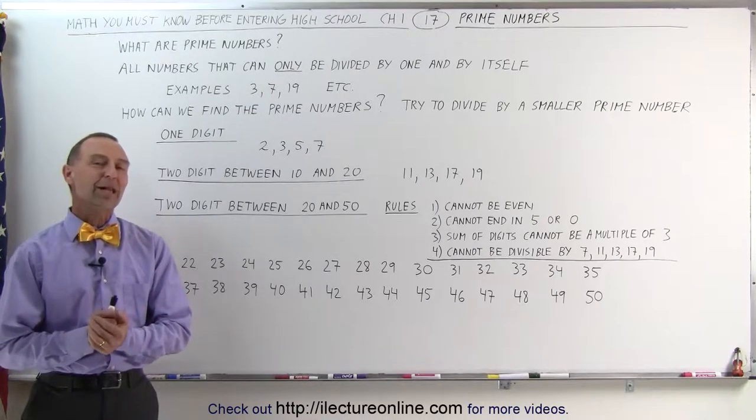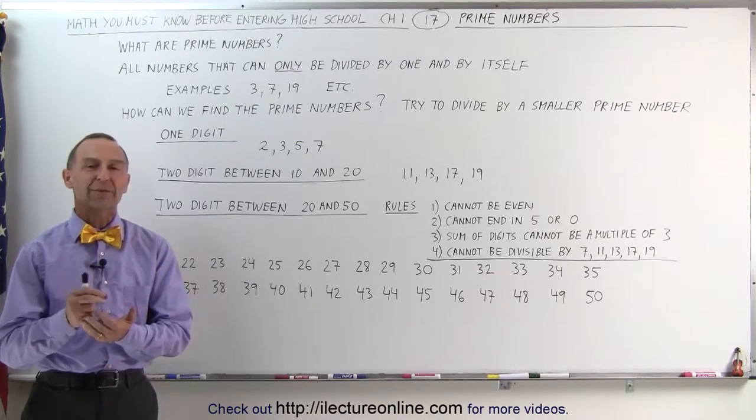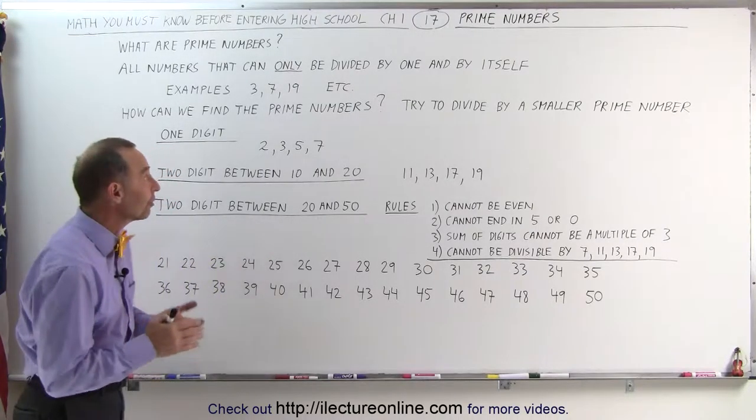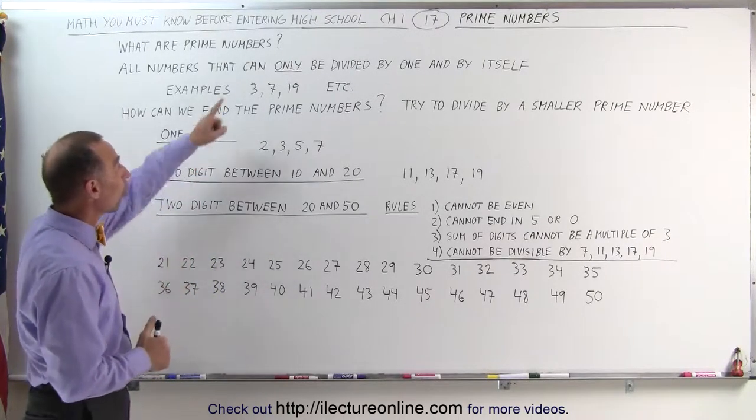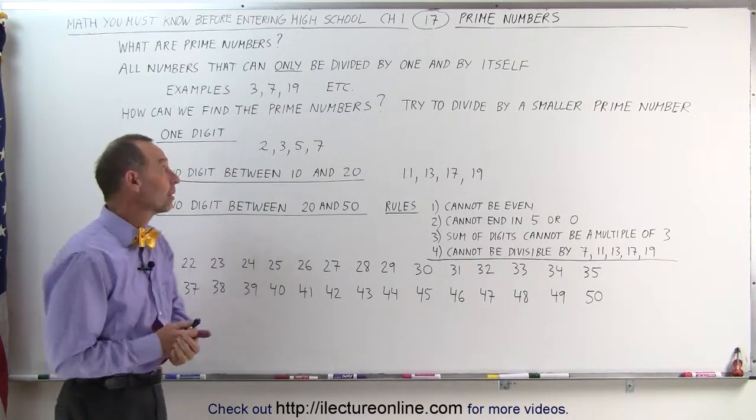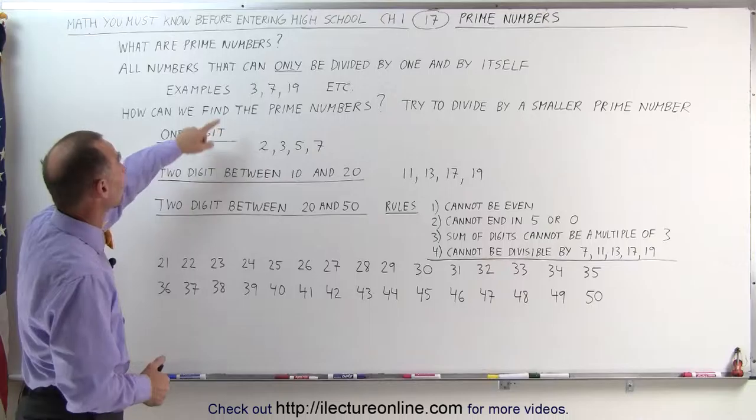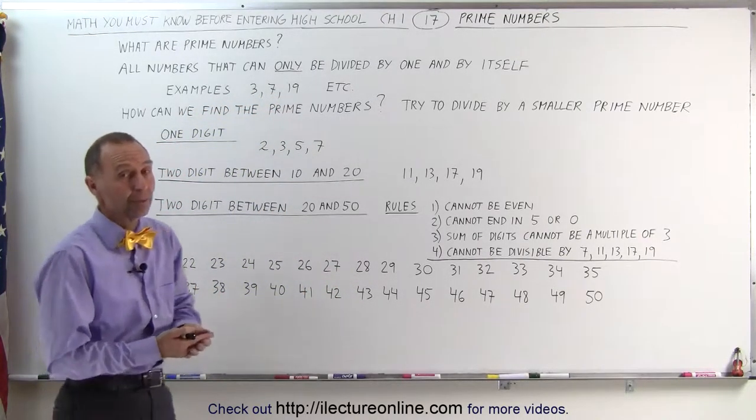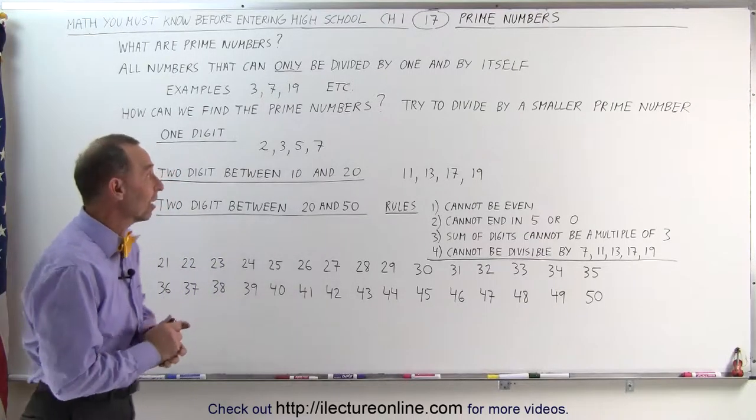Welcome to our lecture online. Now let's talk about a special type of counting number called the prime numbers. Prime numbers are defined as numbers that can only be divided by the number 1 and by itself. Some examples of that are the numbers 3, 7, and 19. You can go ahead and try it. 3, 7, 19 can only be divided by 1 and by itself.